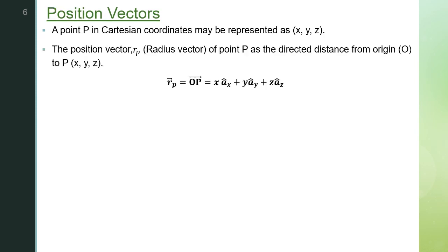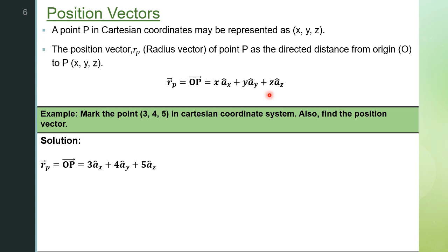The next term related to vectors is the position vector. Any point P in space, denoted by coordinates x, y, z, can be explained using the position vector. It is a vector directed from the origin to the point P, given by x ax-cap + y ay-cap + z az-cap, where ax-cap, ay-cap, az-cap are the unit vectors along x, y, and z, and x, y, z are the coordinates. For example, if we have the point (3, 4, 5) in the coordinate system, the position vector is 3 ax-cap + 4 ay-cap + 5 az-cap.